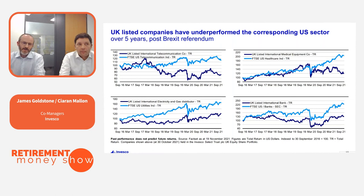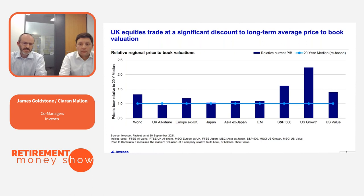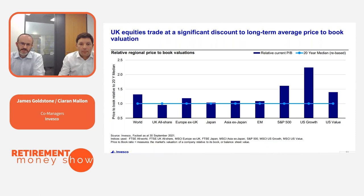A different way to look at valuation is to compare how markets are currently valued versus their past. This chart shows the current price-to-book ratio for various markets against the median of the past 20 years. If a market is below the light blue line, it's below its 20-year median. Of the markets shown — including the world index and major markets globally — the UK is below that line while most others are not. That's been the case for several years, but the discount is beginning to narrow.